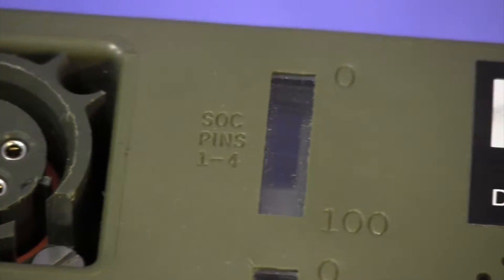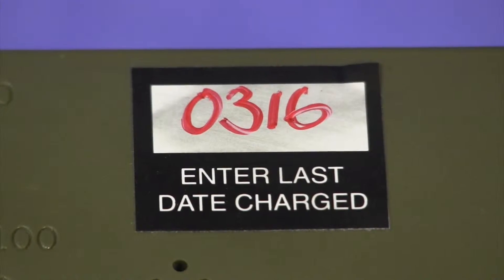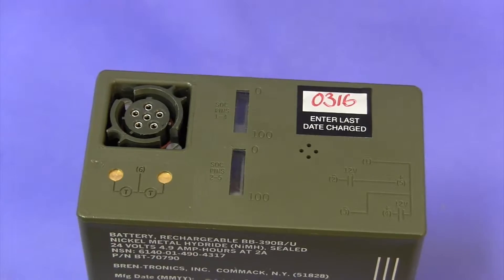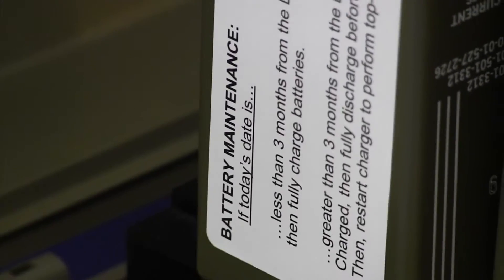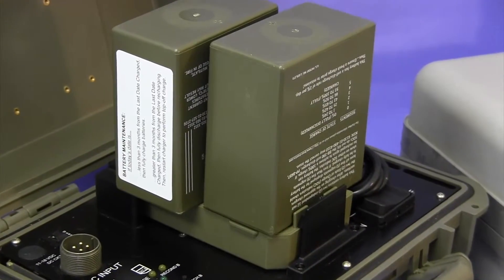First, locate the last date charged label affixed to the right of the battery terminal and state-of-charge battery displays. Check the date recorded on the last date charged label. If today's date is less than three months from the last date charged, then fully charge the batteries.